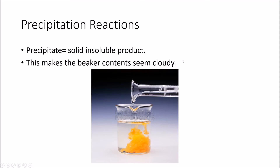What is a precipitation reaction? First, it helps to understand what a precipitate is — it's a solid insoluble product. It makes a beaker's contents appear cloudy or non-transparent. For example, two clear see-through solutions react and produce an orange precipitate that obstructs your view through the beaker. It is solid and insoluble because it has not dissolved in water.